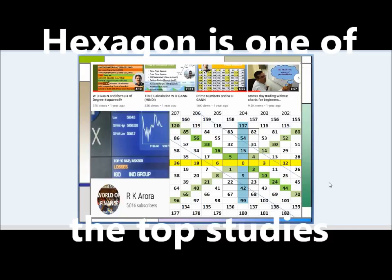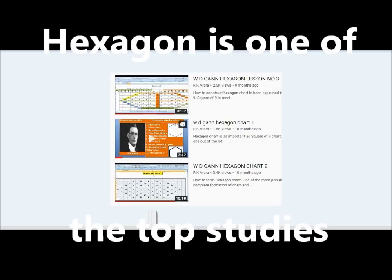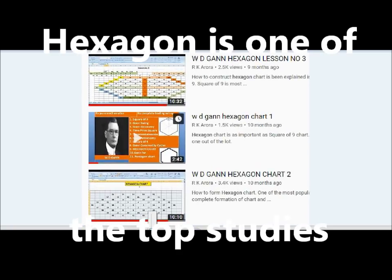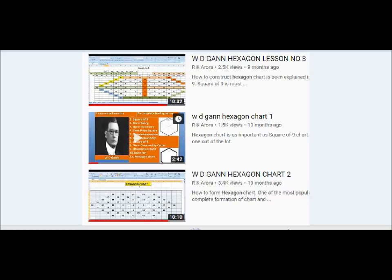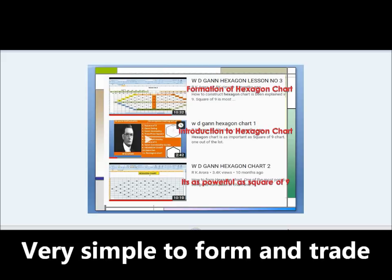But if I understand, Hexagon Chart is no less than Square of Nine, maybe even more. One thing I understand is that Hexagon Chart has never gotten exposure before - how to trade on Hexagon Chart. The formation of Hexagon Chart is as easy as Square of Nine, and trading on it is also as easy.